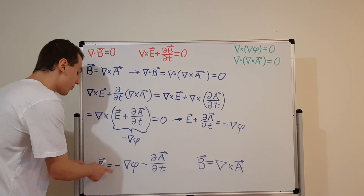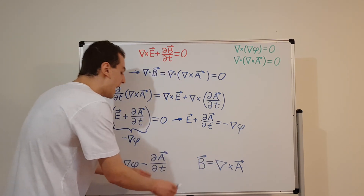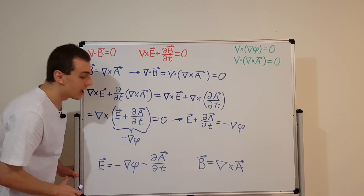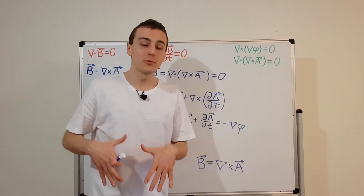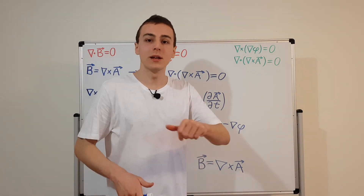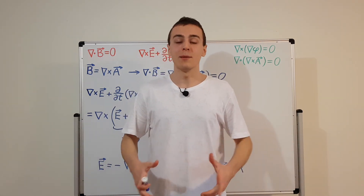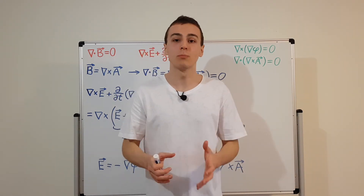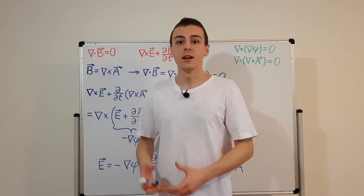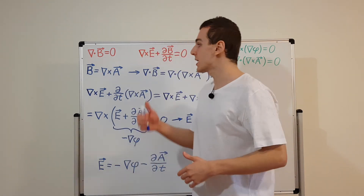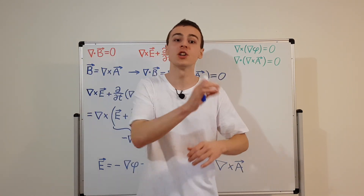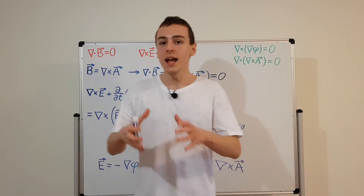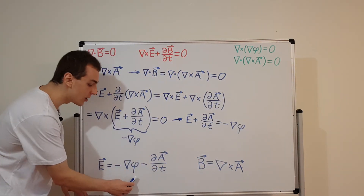So we now have expressions for both the electric and magnetic fields in terms of the scalar and vector potentials — this is very useful. In the next few videos we're going to transform all of classical electromagnetism to describe it in terms of φ and A, taking Maxwell's four first-order equations and turning them into two second-order equations.